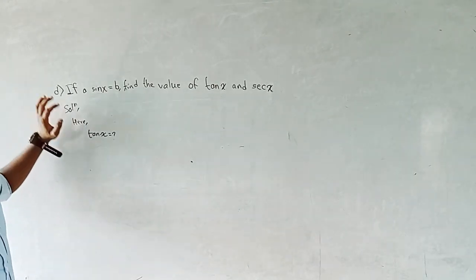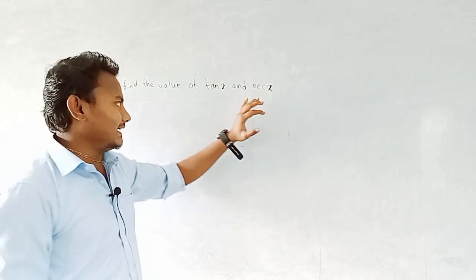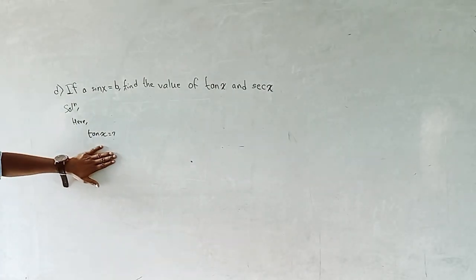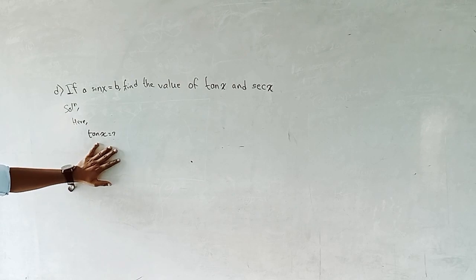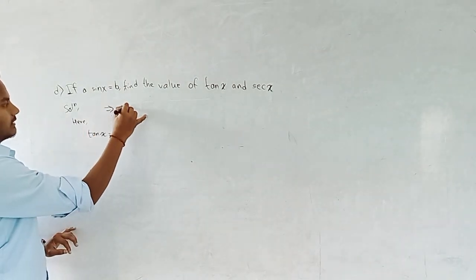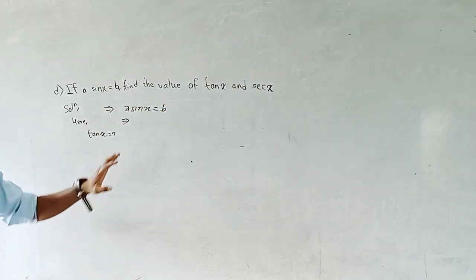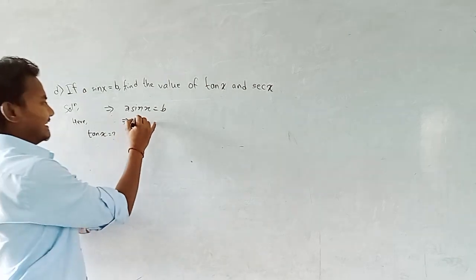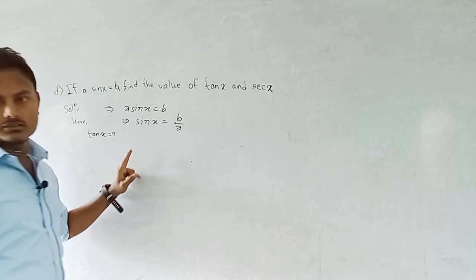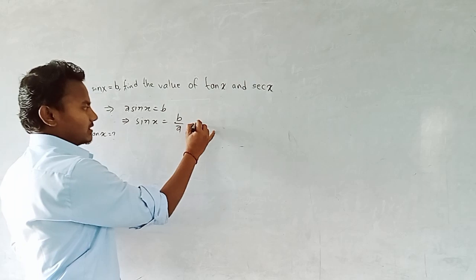We have a question: if a·sin x equals b, find the value of tan x and sec x. We have to find tan x and sec x given the condition a·sin x equals b. So we can write sin x equal to b by a.